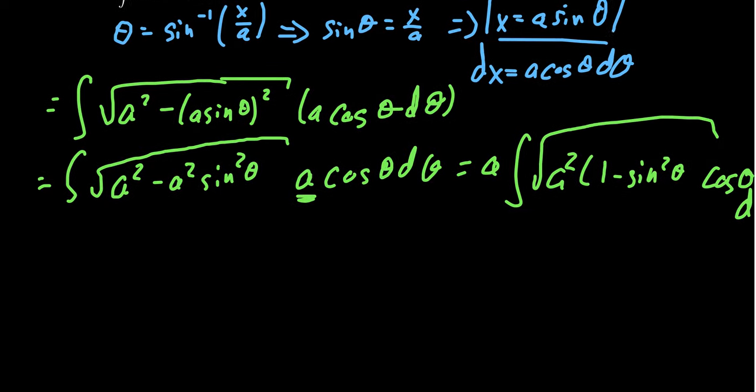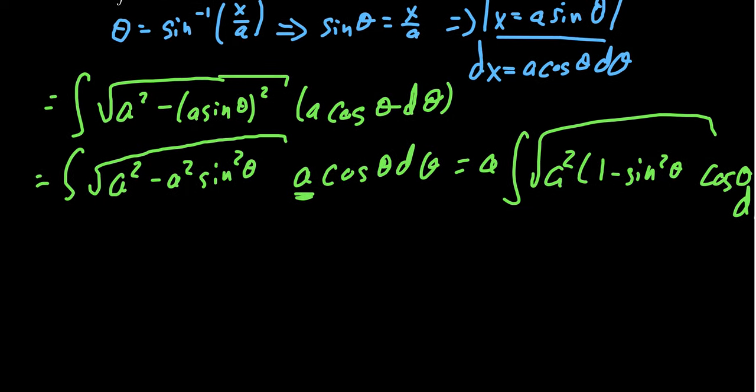I can take the square root of a squared. That is this one right here. That's also going to be an a. So we get a times the integral of a. And we're left with the square root of one minus sine squared times cosine theta d theta.